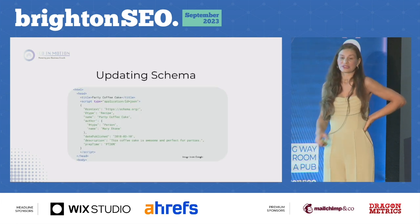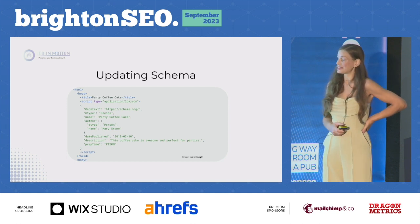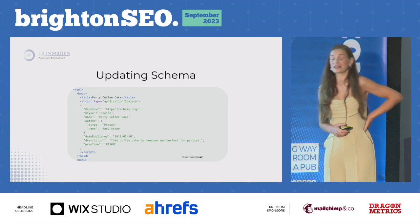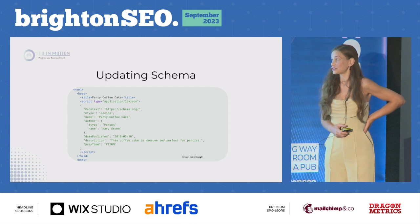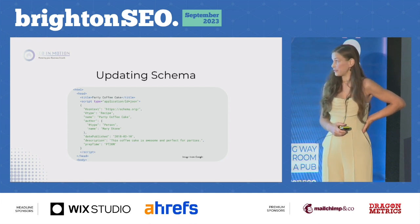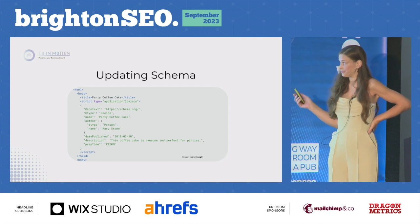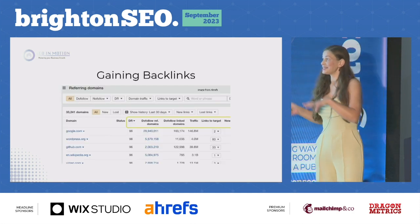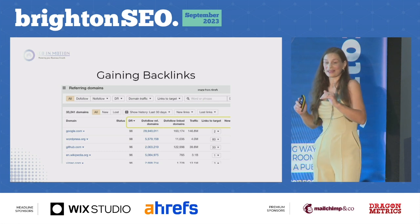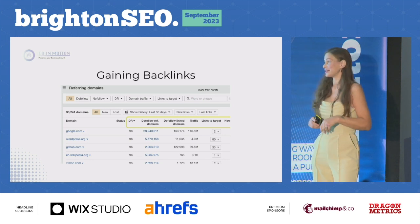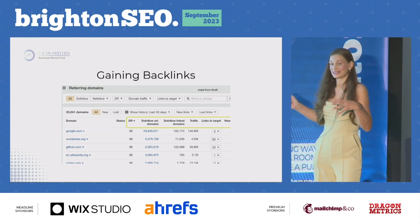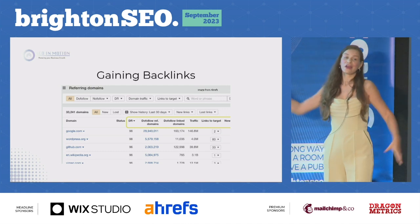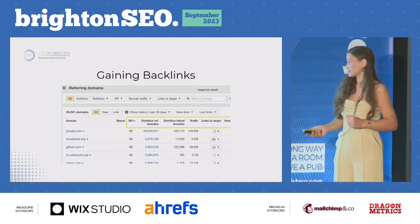Updating schema and testing which schema works — which schema actually gets you the best click-through rate. You can speed this up by looking at when Google's crawling those pages and using Google Search Console data to monitor performance post-crawl. Going back to backlinks: what backlinks are actually pushing performance? It's really interesting to see when Google's crawling post-getting a backlink and what the performance gain is from it.